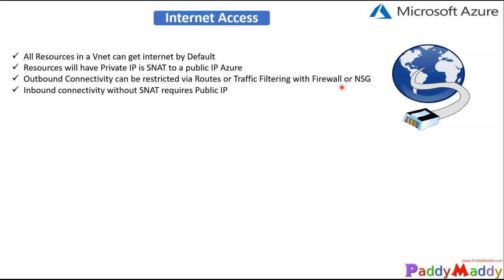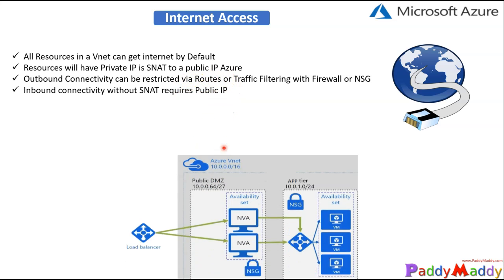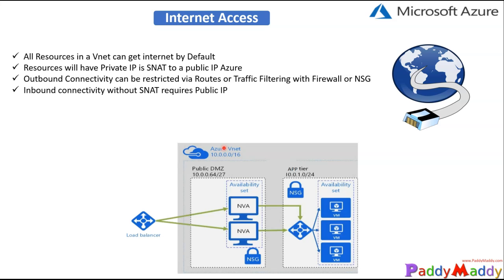And also for inbound connectivity, you can configure it without SNAT by directly assigning a public IP. That means instead of going with a private IP that converts to a public IP via SNAT (source NAT), you can assign the public IP directly so that communication can be established automatically.